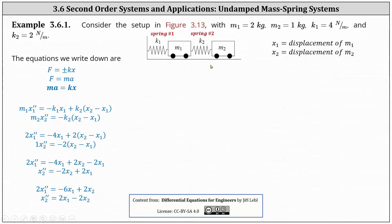Then analyzing spring two: as mass one moves to the right, spring two is compressed, and the force will be applied to the right, giving a positive force equal to k two times the difference of x two and x one. The difference of x two and x one is the amount spring two is compressed. For example, if mass two is displaced four units and mass one is displaced three units, then spring two would only be compressed by four minus three, or one unit.